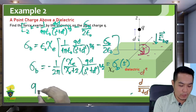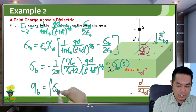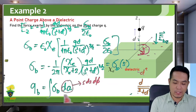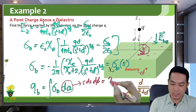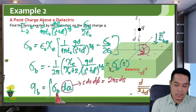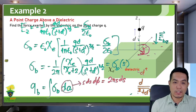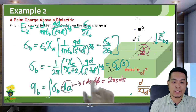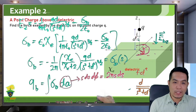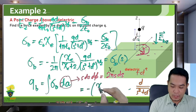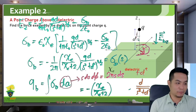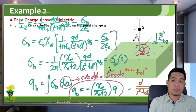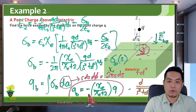Knowing σ_B, we can solve for the total bound charge on the surface: it is the integral of σ_B times dA, where dA equals S dS dφ. Since there is no φ dependence, integrating over dφ gives 2π, so dA becomes 2πS dS. Using this and substituting σ_B, with the substitution u = S² + D², the integration yields Q_B equals negative χ_e over (χ_e + 2) times Q — so it's negative and proportional to Q.